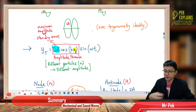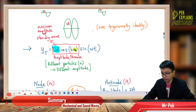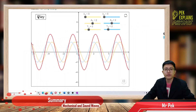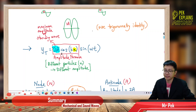Two A cos kx is actually the amplitude formula. We can say that different particles have different amplitude — different x has different amplitude. This whole thing, two A cos kx, is actually the amplitude for different particles. Different particles have different amplitude.